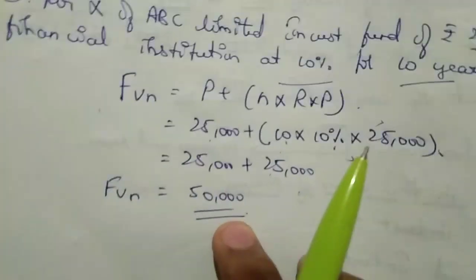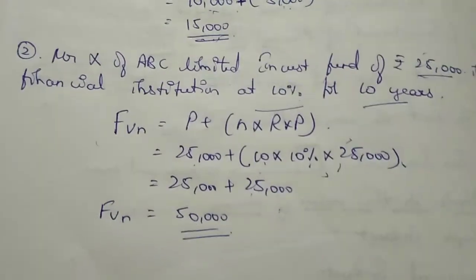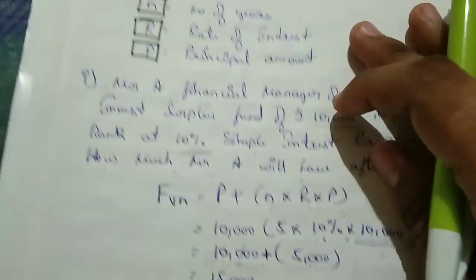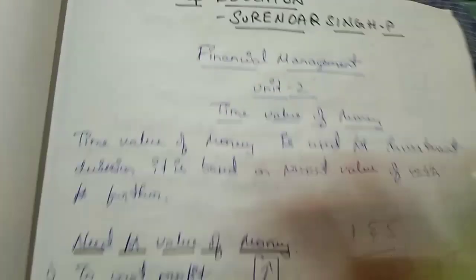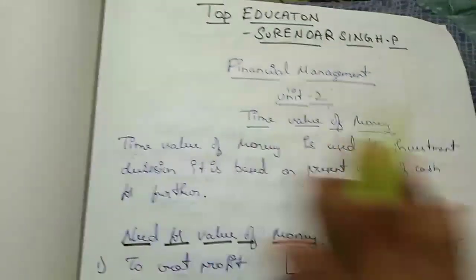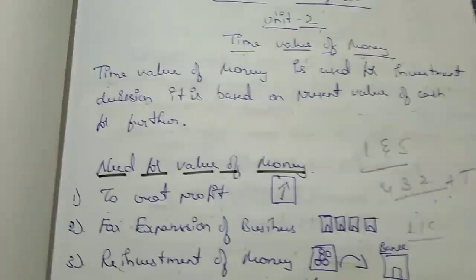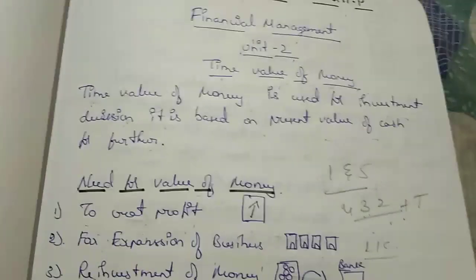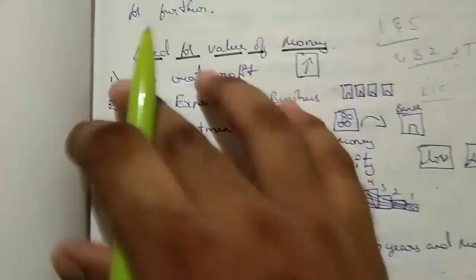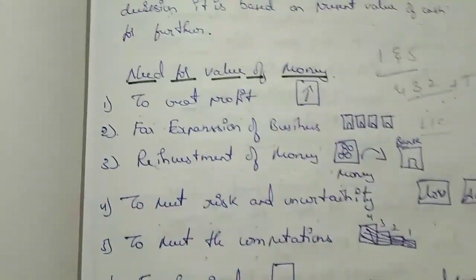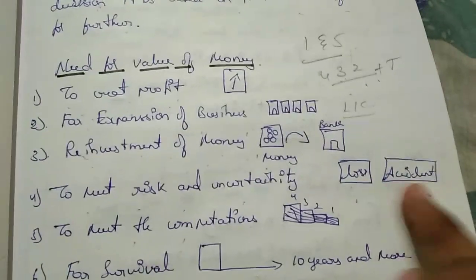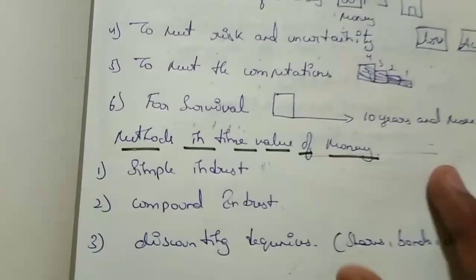In this session we'll learn only this much because I think we have to conclude this video. What we have learned? Quickly let's know. Financial management unit 2 - time value of money. What is time value of money? Time value of money means it is used for investment decisions. It is very important for investment decision and it is based on the present value of cash for future. What are the needs for money? To create profit, for the expansion of business, reinvestment of money, to meet risk and uncertainties, to meet competitions, and for survival.